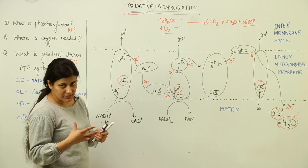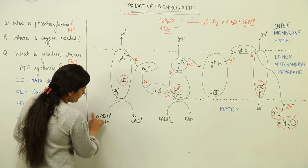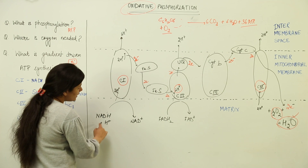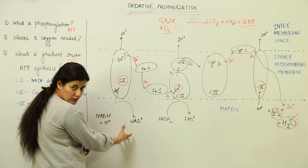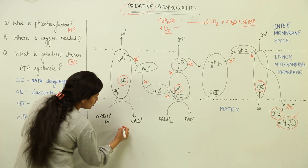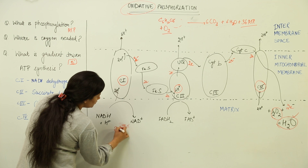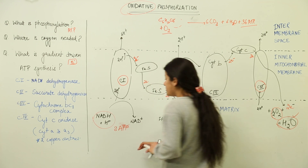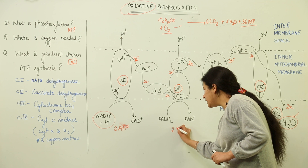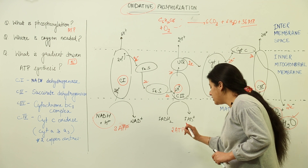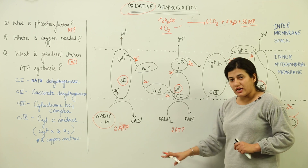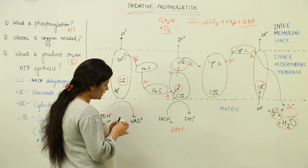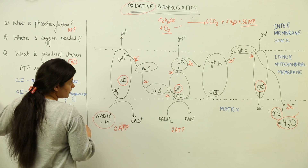We now have an answer for where oxygen is used. Regarding ATP generation: when one NADH molecule loses its proton and gets oxidized to NAD⁺, this generates three ATPs. One FADH₂ molecule gives rise to two ATPs. So the question remains: how exactly are these ATP molecules formed, and how do we account for all 36 ATPs?